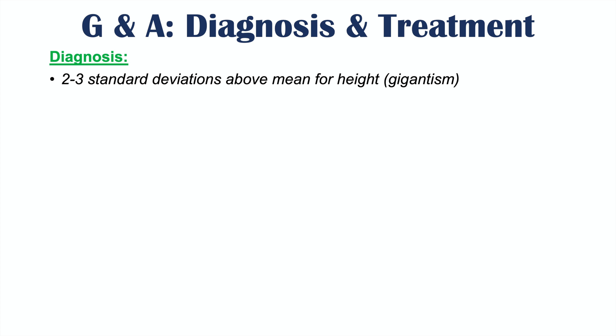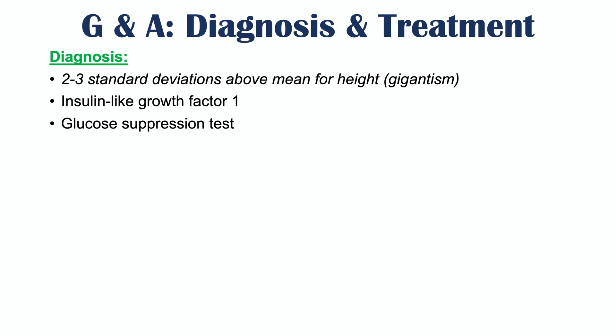With regards to diagnosis, gigantism can often be a clinical diagnosis if a patient is two to three standard deviations above the mean for height. IGF-1 measurements are very key for both diagnoses. Although you might expect elevated growth hormone to be measured directly, growth hormone is pulsatile and not stable, so IGF-1 — which will be elevated — is the preferred measurement. A glucose suppression test can also be performed: since glucose normally inhibits growth hormone, giving a bolus of glucose should suppress growth hormone levels, but it does not in these conditions. An MRI of the head is also important to assess for a pituitary adenoma.